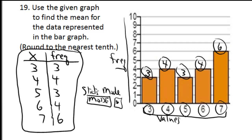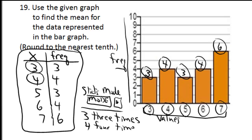That takes you to stats mode. Then you enter each of the values using the M plus key. You're going to enter 3 three times, and you're going to use the M plus key between each entry. Then you're going to enter 4 four times, and you'll enter 5 three times.